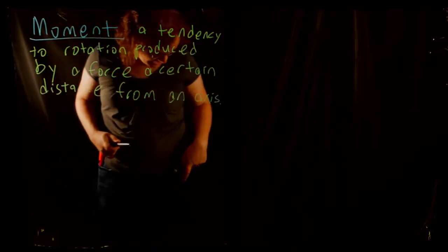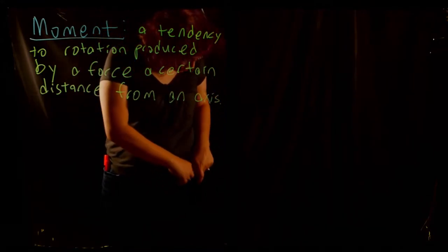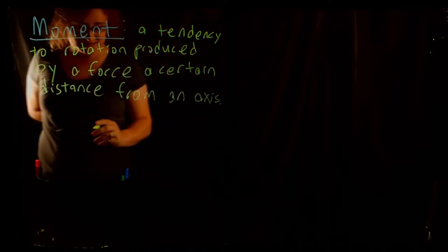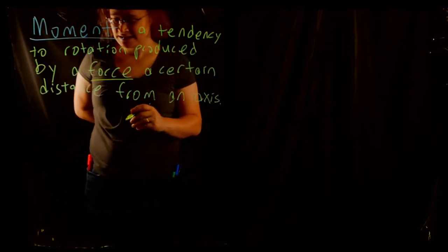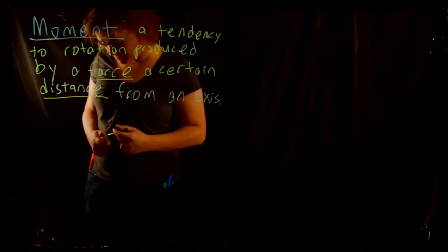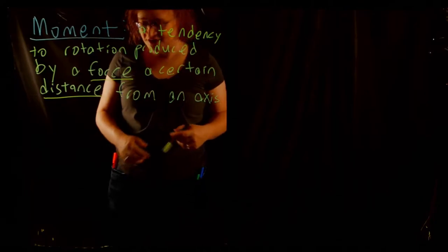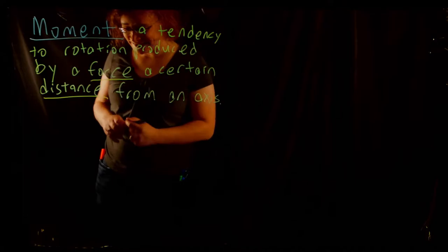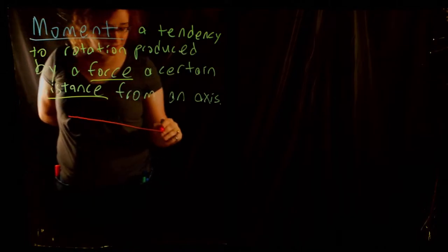We have two components that feed into moments — not components in terms of XY components, but two items that are needed to produce a moment. We need a force and a distance. In other words, a force and a moment arm. In other contexts, moments are sometimes referred to as torques, although we don't use that term in civil and structural engineering. So let's look at this in a little more detail, graphically first.